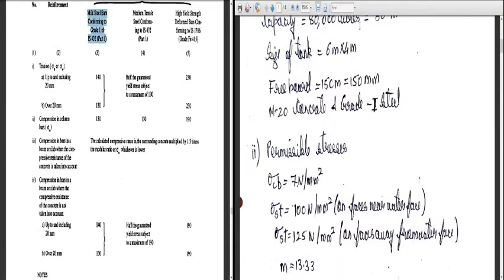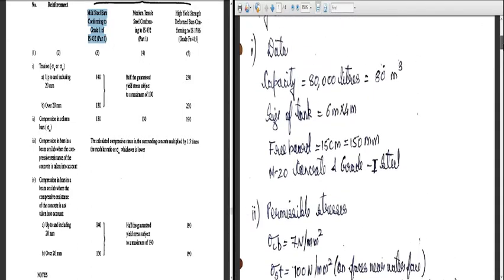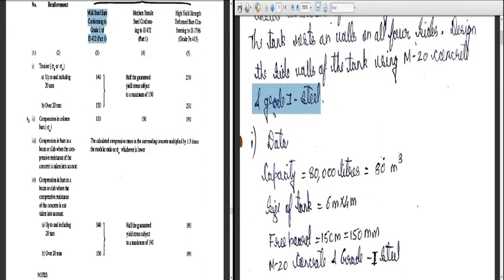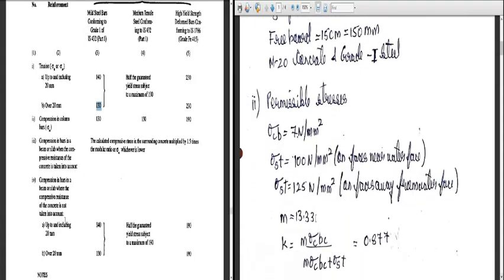For Grade 1 steel — mild steel bars conforming to Grade 1 of IS 432 — bars in tension up to and including 20 mm diameter give 140 N/mm², and over 20 mm gives 130 N/mm². What we have done is taken 100 N/mm² towards the water face and 125 N/mm² on faces away from the water face, noting down the permissible stresses in steel and concrete accordingly.